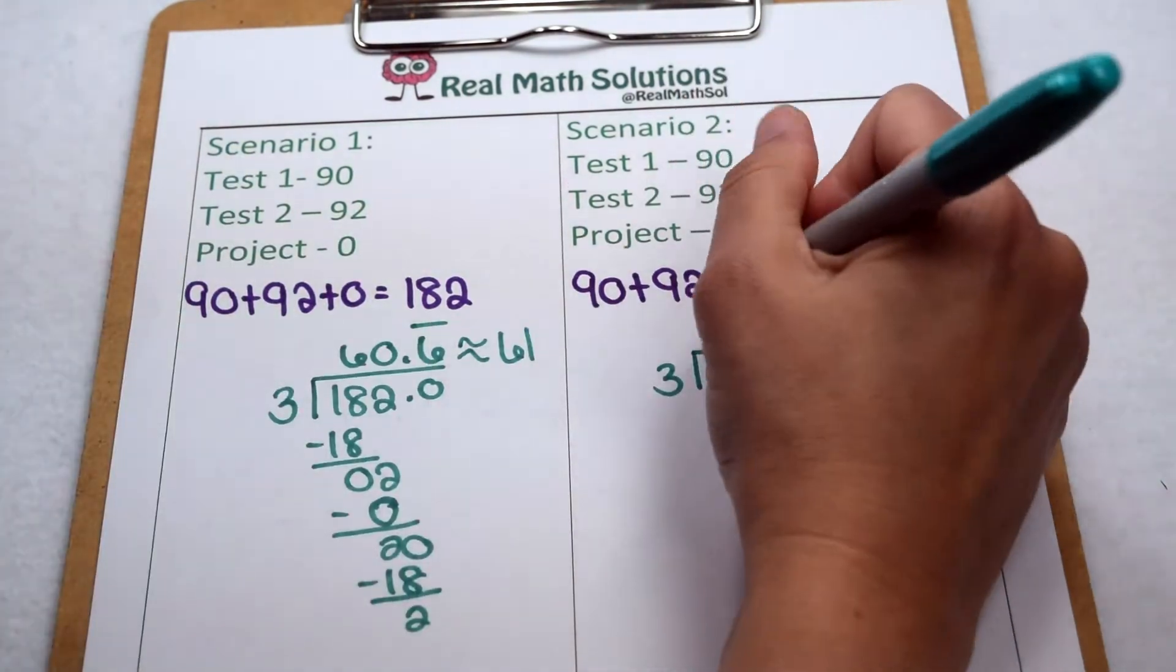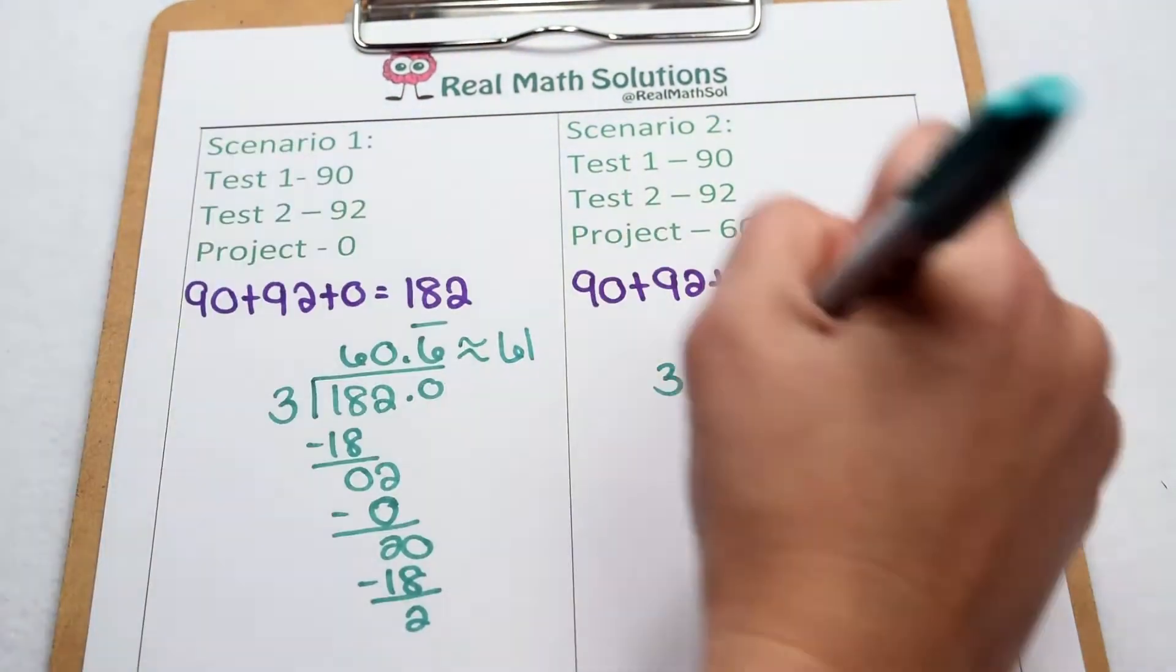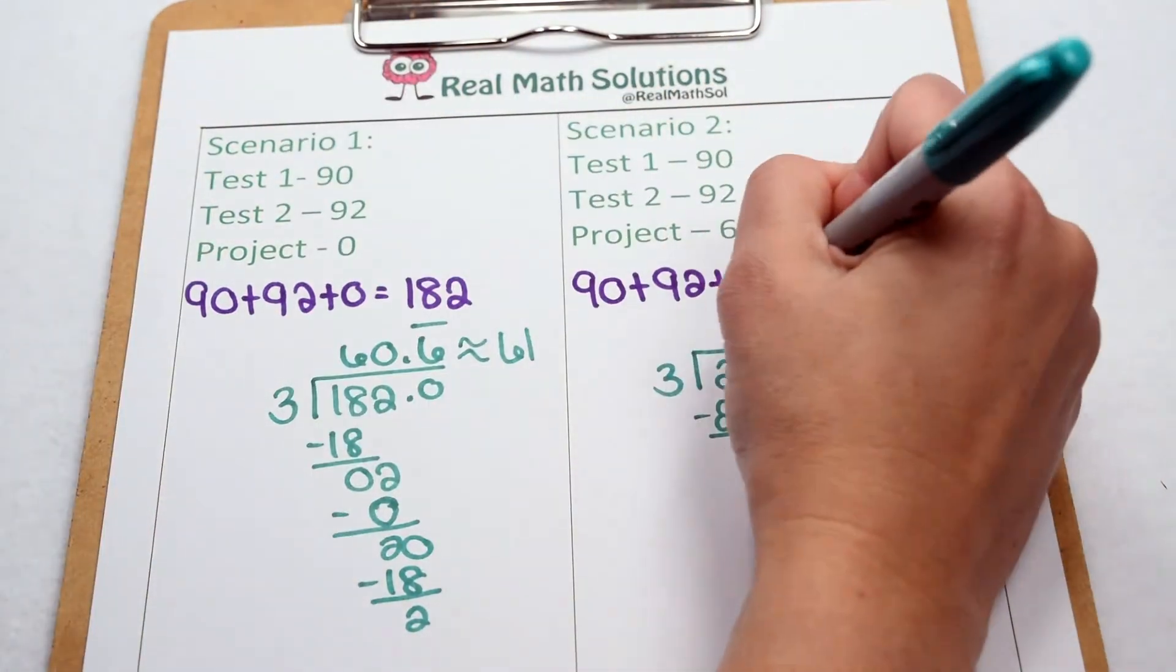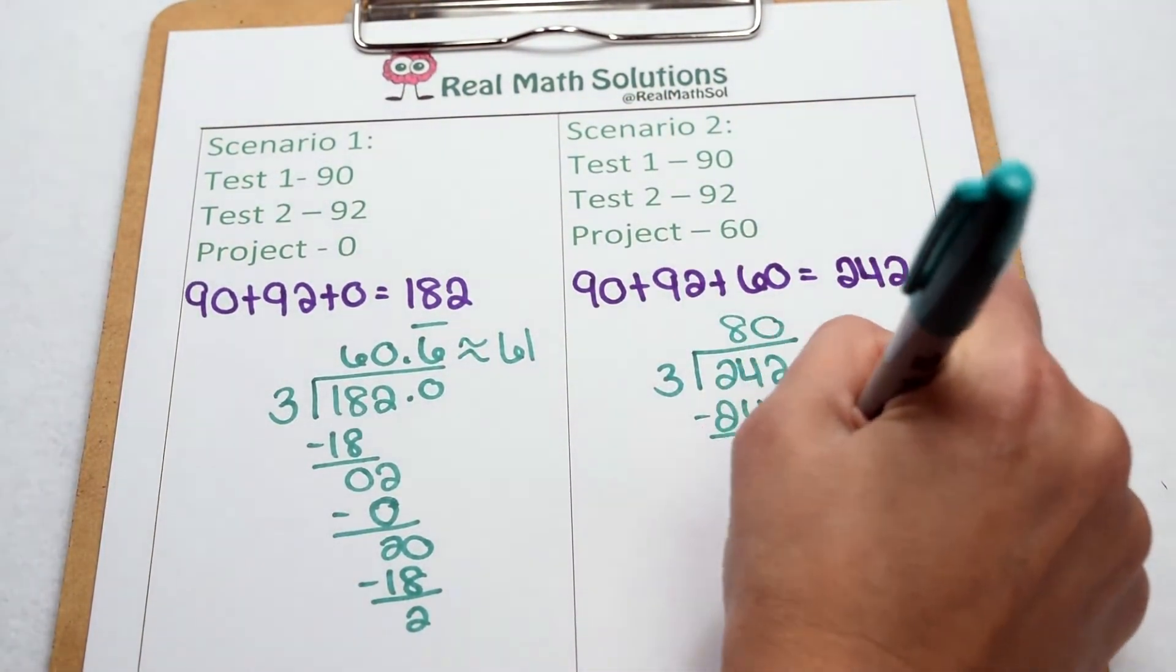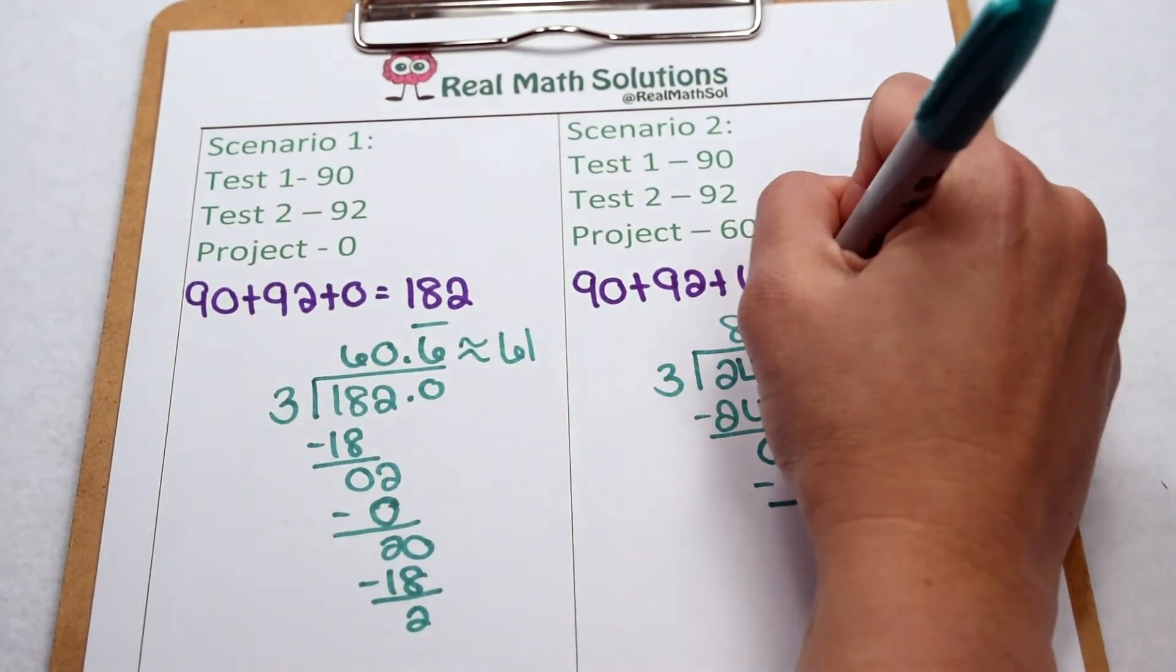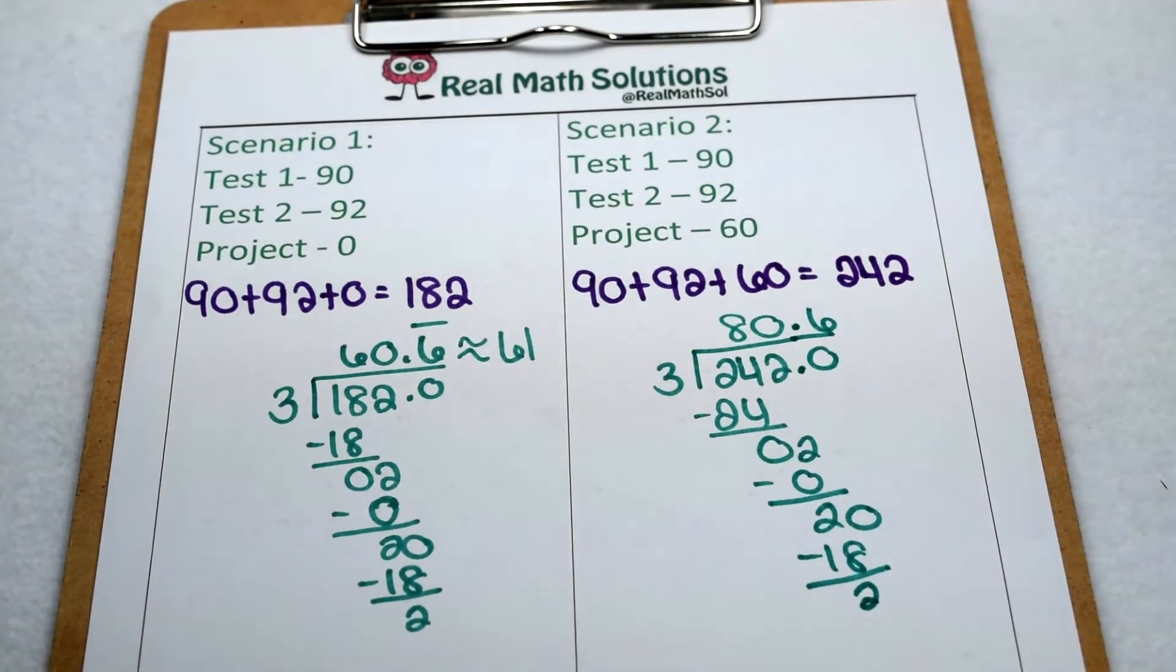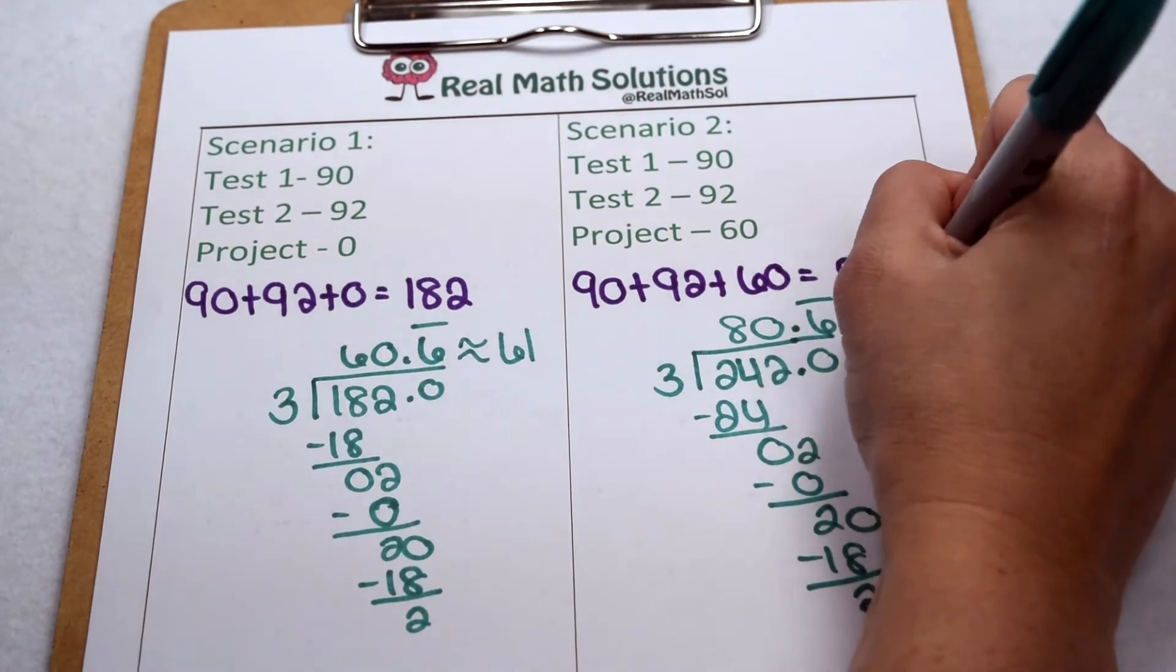Test 1, test 2, and our project. 3 goes into 24, 8 times, so there's none left over, bring down my 2. 3 doesn't go into 2, so there's a 0. So we still have 2, decimal point, decimal point, 0. 3 goes into 20, 6 times when we subtract, that's still 2, so we're going to have a repeating decimal. 80.6 repeating, it's going to round off to 81.